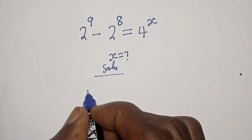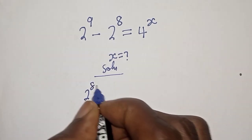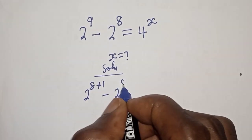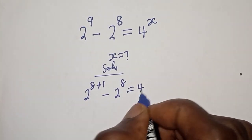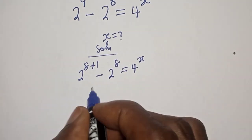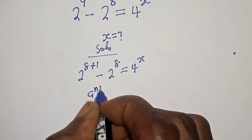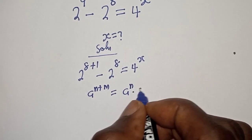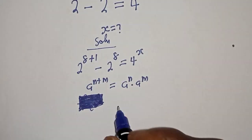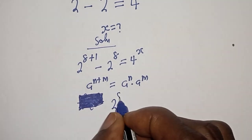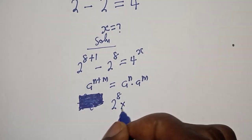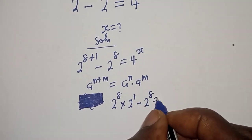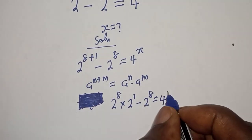2 raised to power 9 can be written as 2 raised to power 8 plus 1, minus 2 raised to power 8, is equal to 4 raised to power s. And from here, if you have a raised to power n plus m, this is equal to a raised to power n multiplied by a raised to power m. Then we have 2 raised to power 8 multiplied by 2 raised to power 1, minus 2 raised to power 8, is equal to 4 raised to power s.